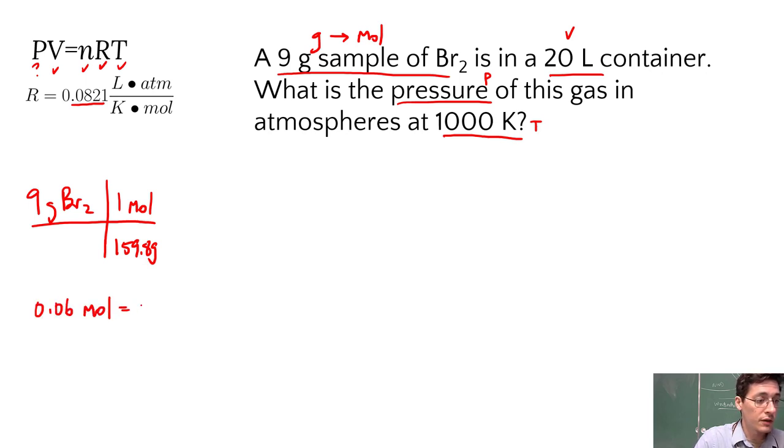So this is our n value here in the ideal gas law. And now we can fill in our values and actually calculate that pressure. So P pressure is our x value. I don't know that. I'm going to multiply that by my V value, 20 liters equals my moles, and we just solved that.